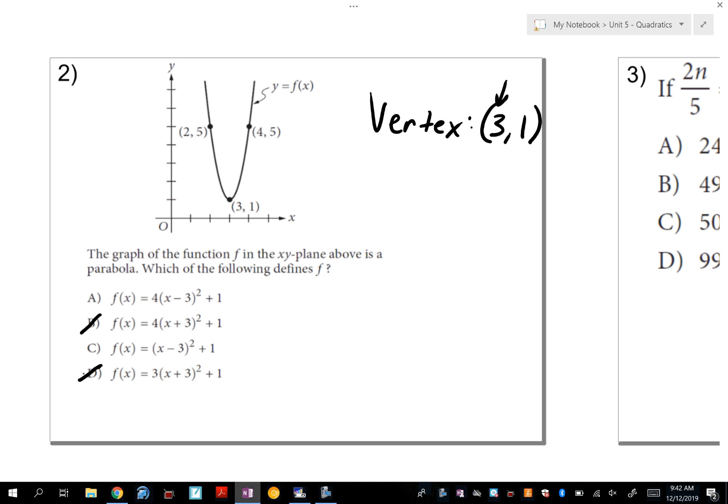Now in terms of differentiating between A and C, one of them has an A value of 4, and the other has an A value of 1. So I think I mentioned this in all my classes at some point, but if I were to go to the vertex and go over one unit to the right, I've gone over one unit to the right, and what is 1 squared? 1 squared is 1, so if A was 1, then the next point should be right here, or (4, 2). If A was 1, it would be going like that. But since the point is not there, it's actually gone up not 1, but 1, 2, 3, 4 units to get to (4, 5), that means A must be 4. So that's why the answer is A.